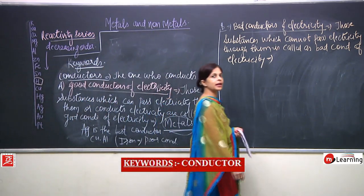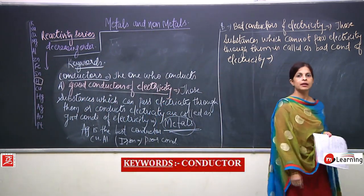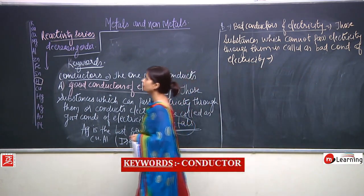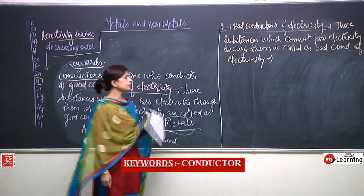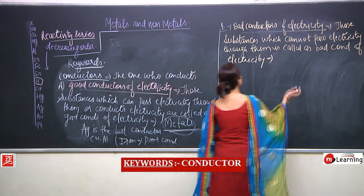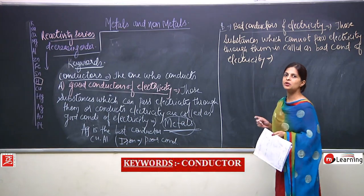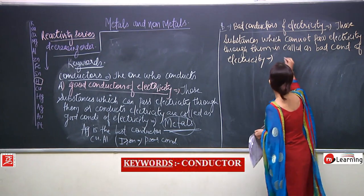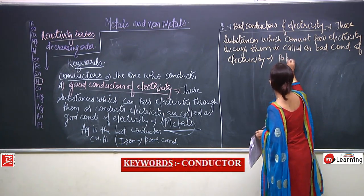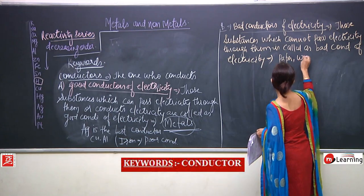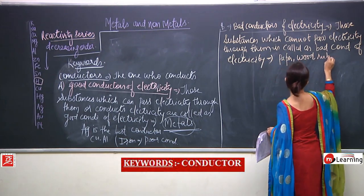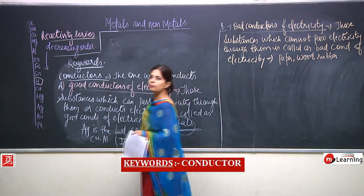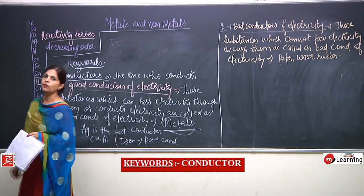Non-metals are also poor conductors of electricity, though we have exceptions. The examples of bad conductors include paper, wood, and rubber — these are bad conductors of electricity.